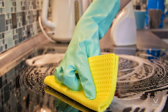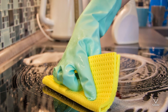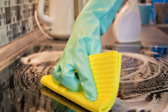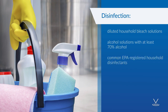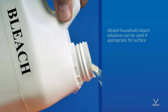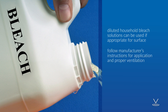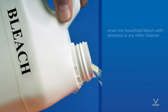If surfaces are dirty, they should be cleaned using a detergent or soap and water prior to disinfection. For disinfection, diluted household bleach solutions, alcohol solutions with at least 70% alcohol, and most common EPA-registered household disinfectants should be effective. Diluted household bleach solutions can be used if appropriate for the surface. Follow the manufacturer's instructions for application and proper ventilation. Check to ensure the product is not past its expiration date. Never mix household bleach with ammonia or any other cleanser.